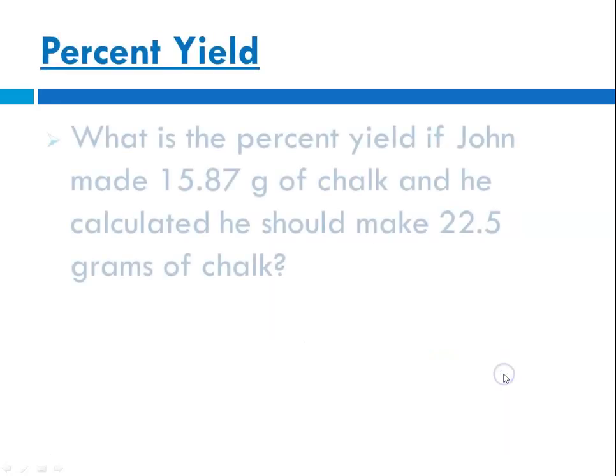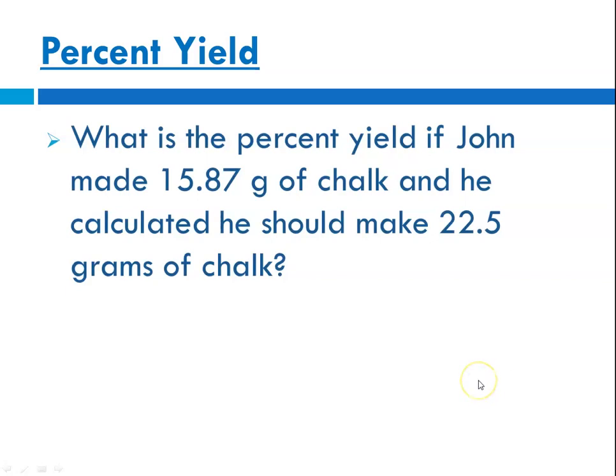So here's a sample problem. What is the percent yield if John made 15.87 grams of chalk, and he calculated he should make 22.5 grams?